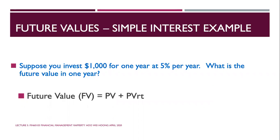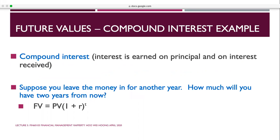Simple interest example: suppose you invest $1,000 for one year at 5% per year — what is the future value in one year? PV = $1,000, r = 0.05, t = 1. Substitute into the formula to get the future value. For compound interest, suppose you leave the money in for another year — how much will you have two years from now? Your t becomes 2, so interest is compounded twice.